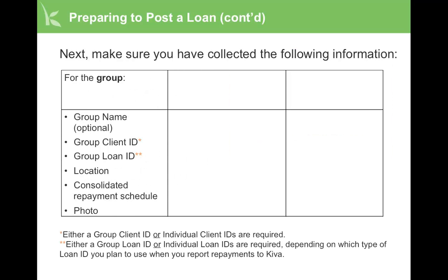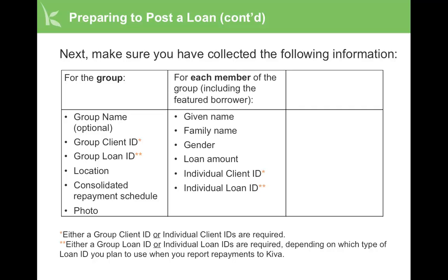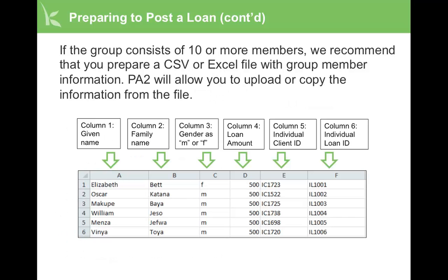Next, make sure you have collected the following information. For the group: the group name, group client ID, group loan ID, location, consolidated repayment schedule, and photo. For each member of the group, including the featured borrower, you need the given name, family name, gender, loan amount, individual client ID, and individual loan ID. For the featured borrower only, you'll need the loan use and personal details. Please note that for the client IDs and loan IDs, you either need to have a group ID or individual IDs for each client. If the group consists of 10 or more members, we recommend that you prepare a CSV or Excel file with group member information. PA2 will allow you to upload or copy the information from the file.